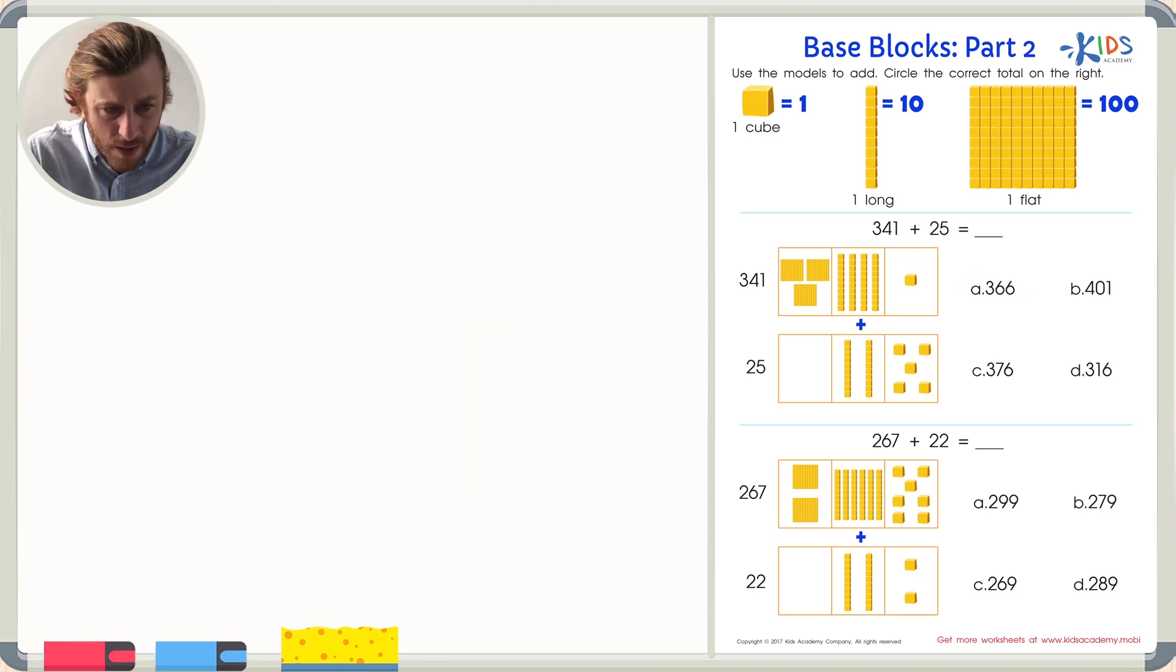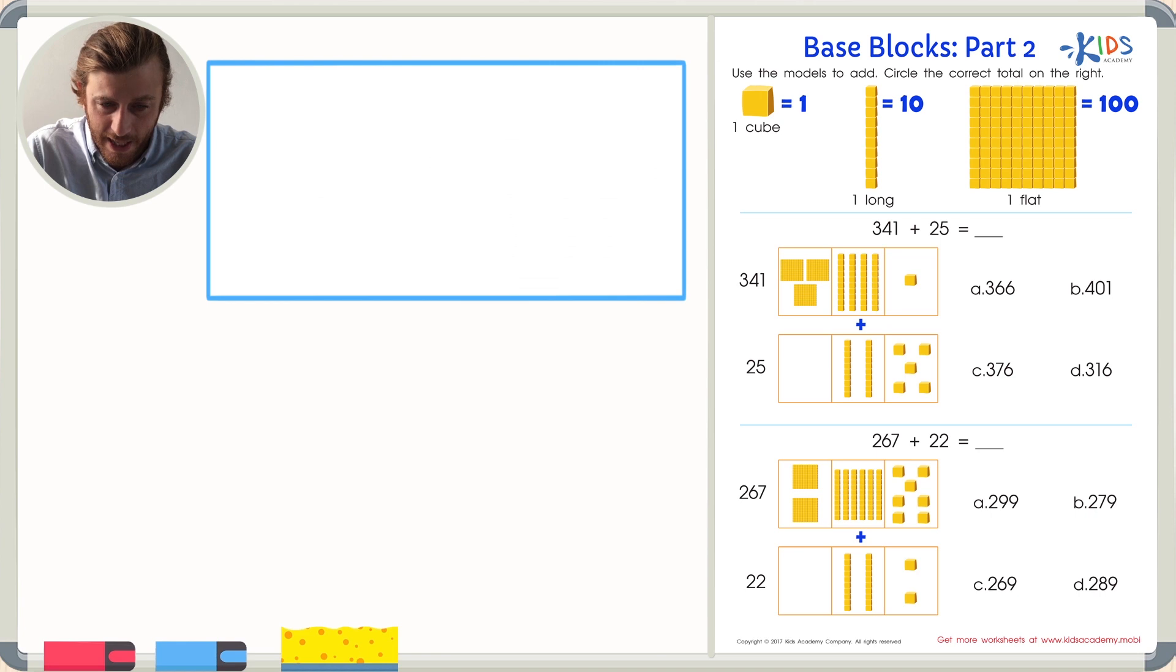We'll start off by making our place value chart again. We'll fill in the O for the ones, T for the tens, and H for the hundreds. We'll be adding 267 plus 22. So, of course, we'll start with the ones place. Let's count the cubes in 267 in the ones place. There are one, two, three, four, five, six, and seven cubes. We can add the other two cubes, but let's just keep counting. Seven, eight, and nine. There are nine ones.